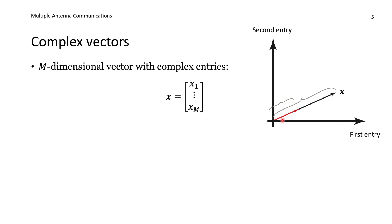Note that this is just one geometric way of illustrating the vector. Each dimension is actually complex-valued, so it is not formally just one drawable dimension, but it still conveys the idea that there is a complex vector space where a vector is a point, represented as an arrow from the origin to that point.